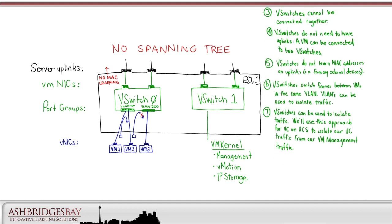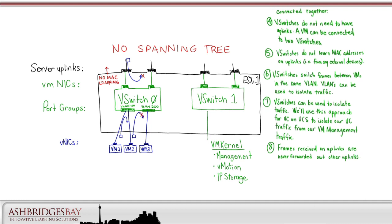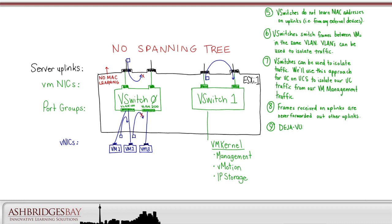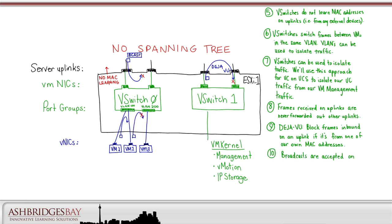Let's finish with some simple things about uplinks. Frames received on uplinks will never be forwarded out other uplinks. We'll also do dejavu checking — we'll block frames inbound from one of our own MAC addresses. And finally, on a vSwitch, broadcasts will only be accepted on one uplink.